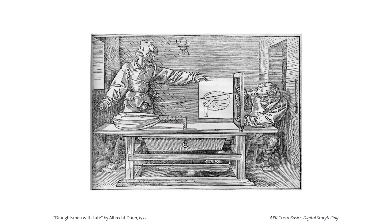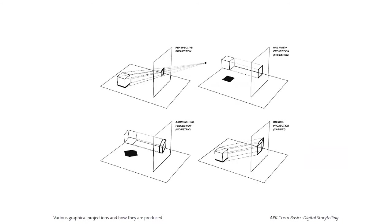We have a three-dimensional spatial world and we want to show it on a flat paper or computer screen — we need to project that geometry onto the flat surface. This is called a projection, a mathematical technique. There are different types: perspective projection, which is how our eyes see; axonometry or isometric projection, where the projection lines are parallel; and elevations, where the surface of the object is parallel with your viewing plane.